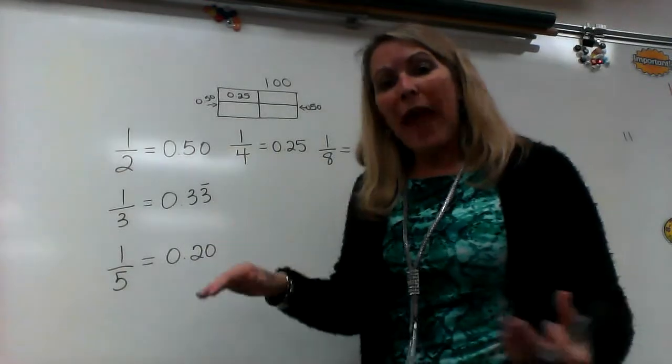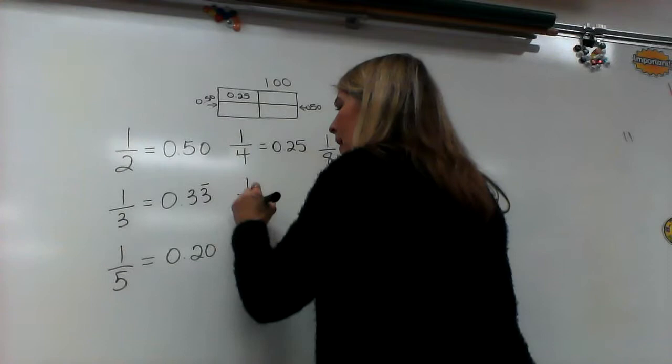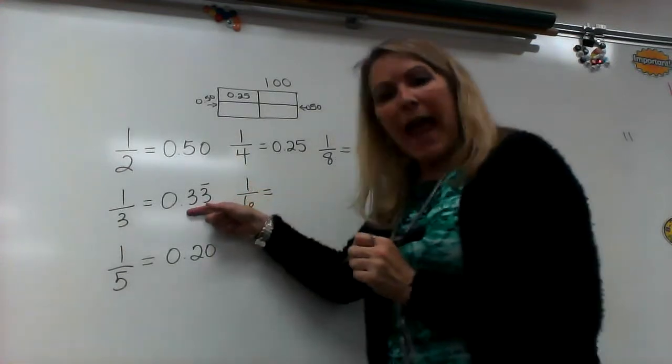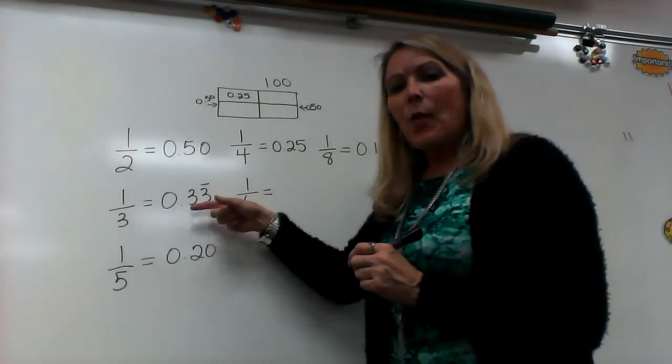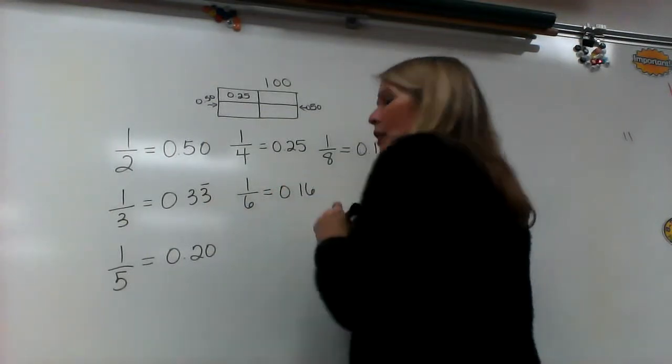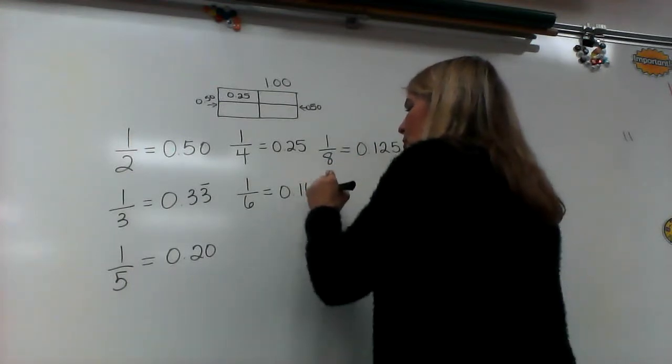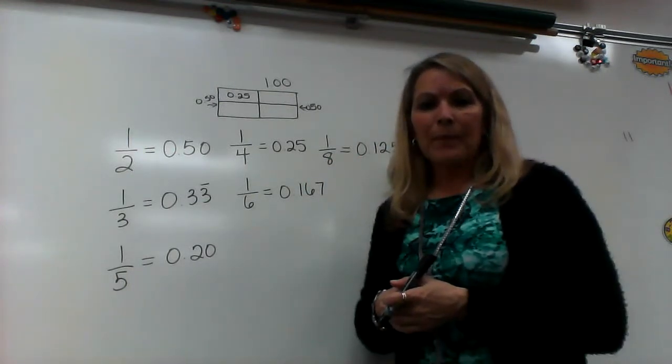So, now that we know that, when we go to our thirds, I'm going to double the denominator, and I'm going to half my decimal. So, half of 33 and a third is actually 16 and two-thirds. But, to do this as a decimal, two-thirds would just round to seven.